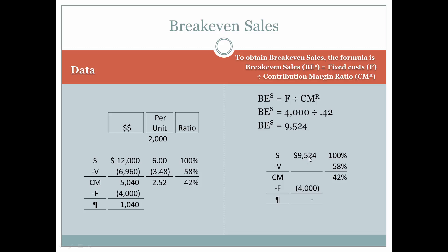Our sales are $9,524. Now we need to calculate what our variable expenses are. We can take 58%, since the variable expenses are supposed to be a stable 58% of sales. So we take $9,524, multiply it by 58%, and we come up with $5,524. When we subtract $5,524 from $9,524, our contribution margin is $4,000, which means that we were able to break even and stay in business for another month.